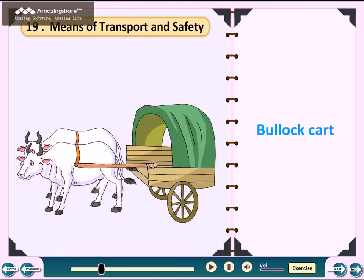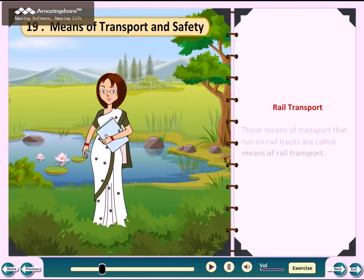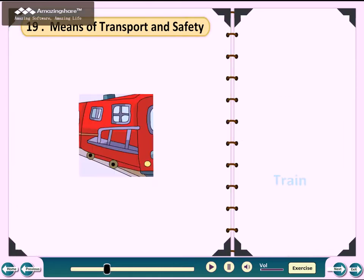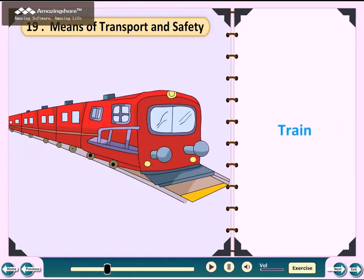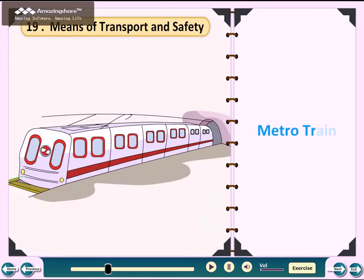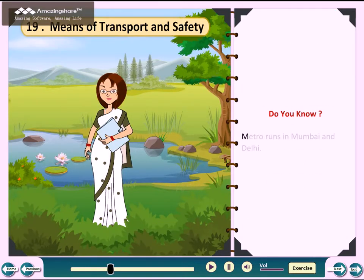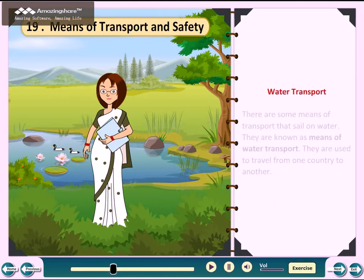Tonga, Bullock Cart. Rail Transport: Those means of transport that run on rail tracks are called means of rail transport. These include train and metro train. Do you know? Metro runs in Mumbai and Delhi.